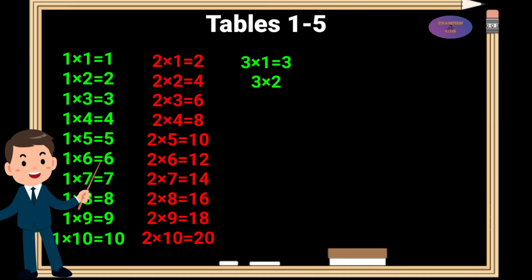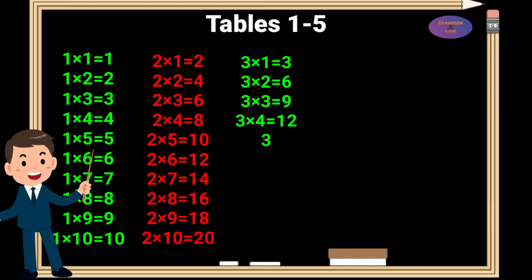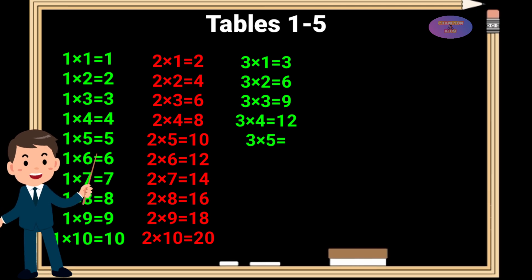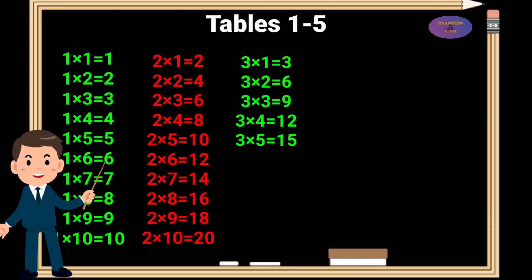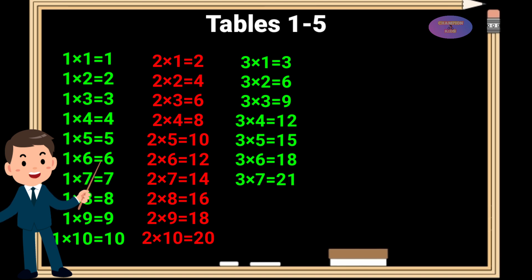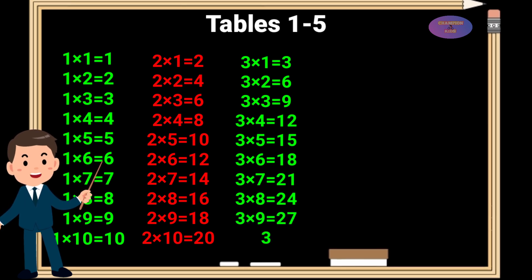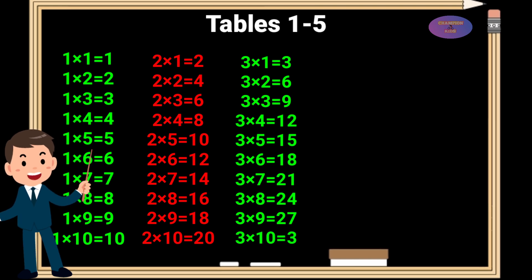3 times 1 is 3, 3 times 2 is 6, 3 times 3 is 9, 3 times 4 is 12, 3 times 5 is 15, 3 times 6 is 18, 3 times 7 is 21, 3 times 8 is 24, 3 times 9 is 27, 3 times 10 is 30.